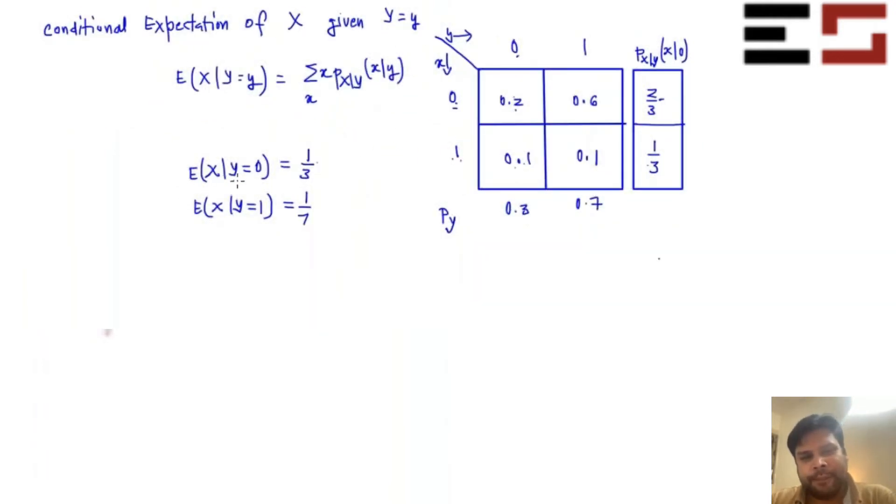Now notice that this expectation of X conditional expectation of X given Y equal to 0 is different from conditional expectation of X given Y equal to 1. Which means you can think of this as a function. This particular thing can be thought of as a function of Y. Right? Yes or no? Like for example, G of 0 is 1 by 3, G of 1 is 1 by 7. So it's a function. The domain is basically the set of values that Y takes, the range of Y is the domain of G. And the codomain is the real line.